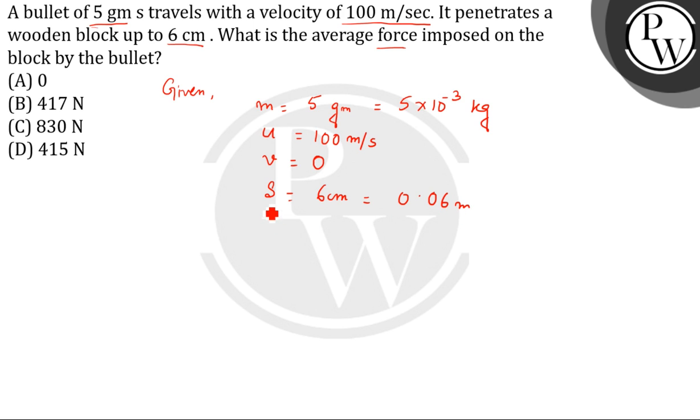First, we have to find the acceleration. We are given v, u, and s, so we will use the third equation of motion: v² - u² = 2as. Therefore, a = (v² - u²) / 2s.